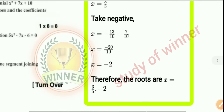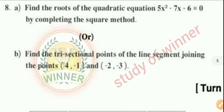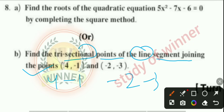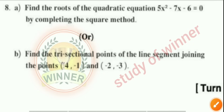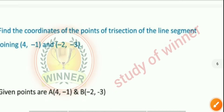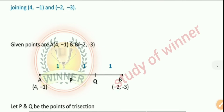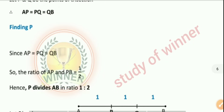The last question: find the trisection points of the line segment joining the points (4, -1) and (-2, -3). The answer for this last question is shown on screen.